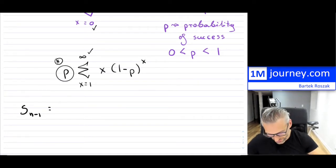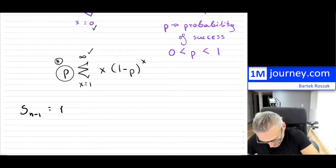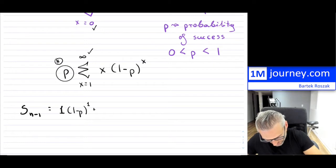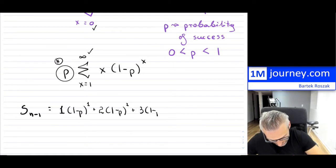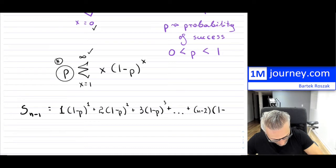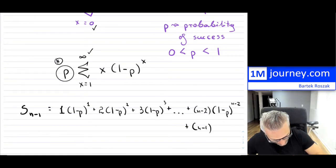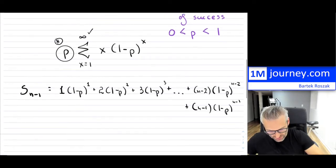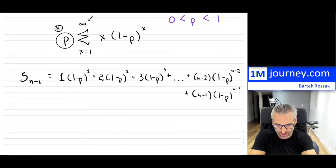I'm just interested in that summation for the moment. So if I do this, what I get for x equals 1 is: 1·(1 minus p)^1, plus for x equals 2: 2·(1 minus p)^2, plus 3·(1 minus p)^3, and so on. I'll go all the way up to (n minus 2)·(1 minus p)^(n minus 2), and finally (n minus 1)·(1 minus p)^(n minus 1). So this is the summation of the first n minus 1 terms that I have.